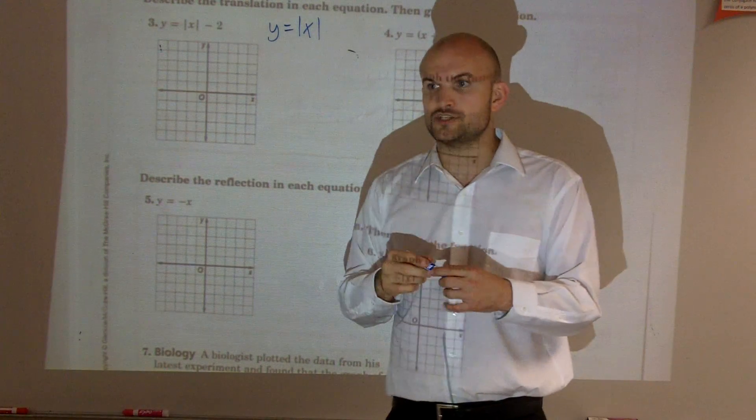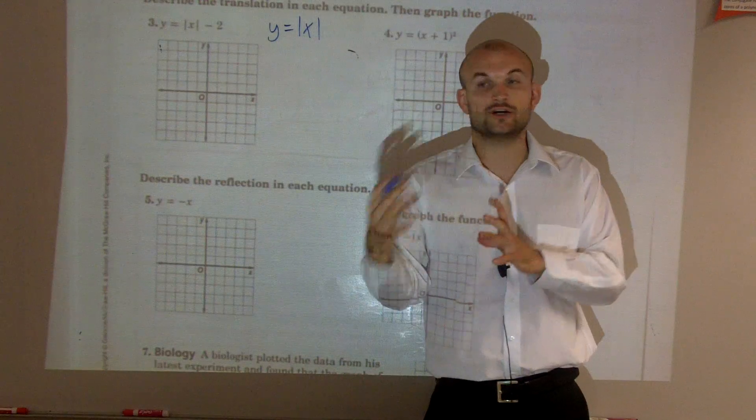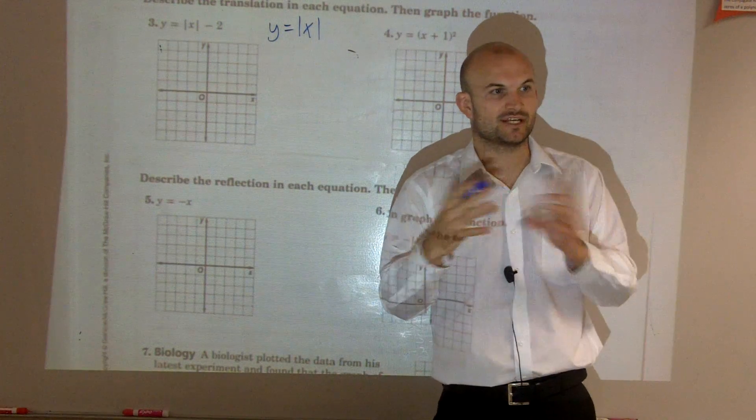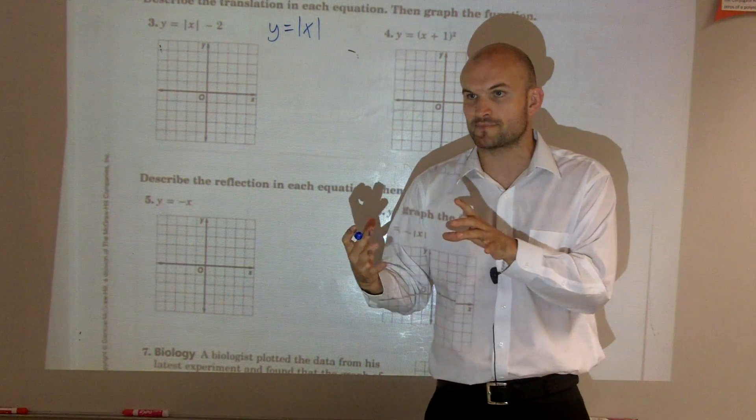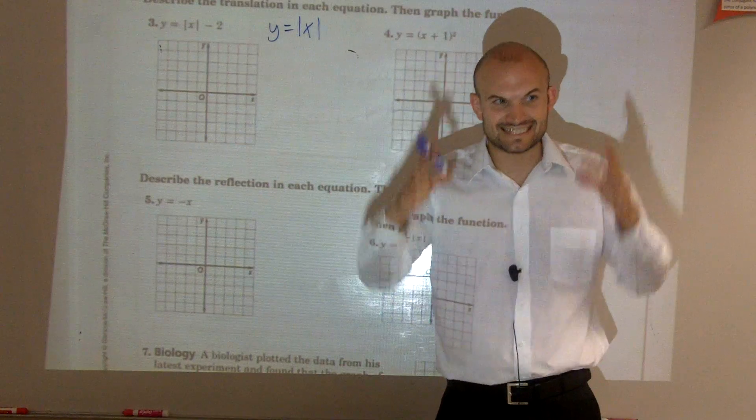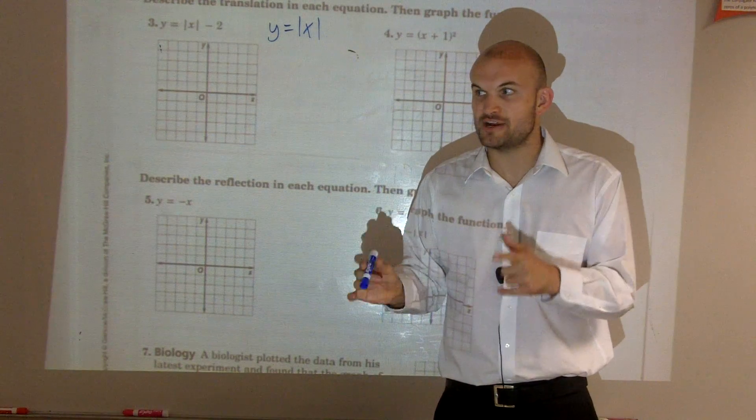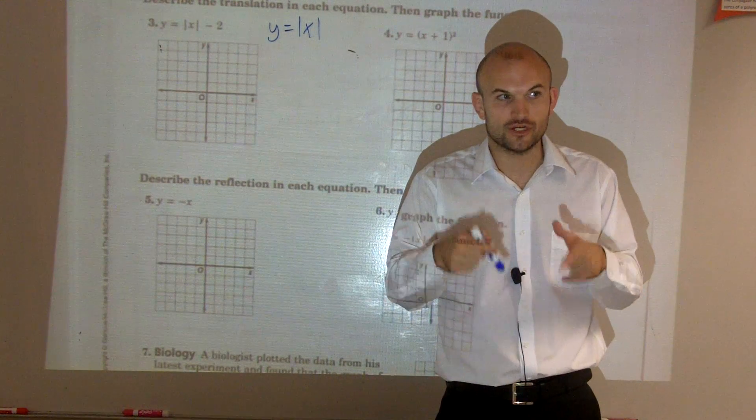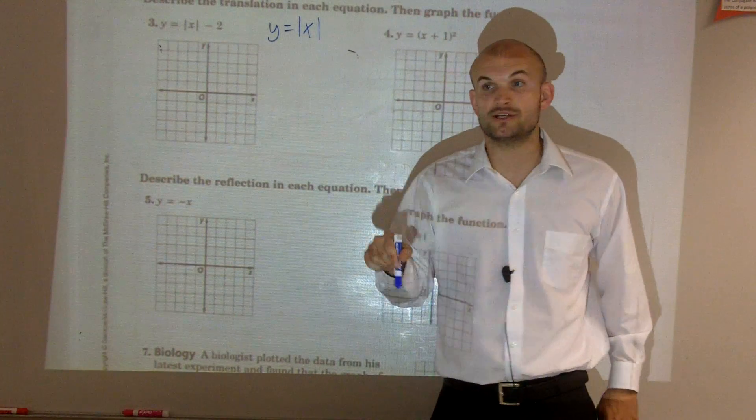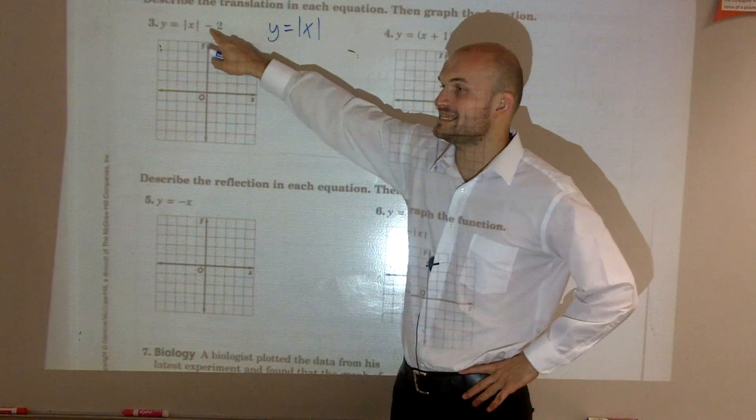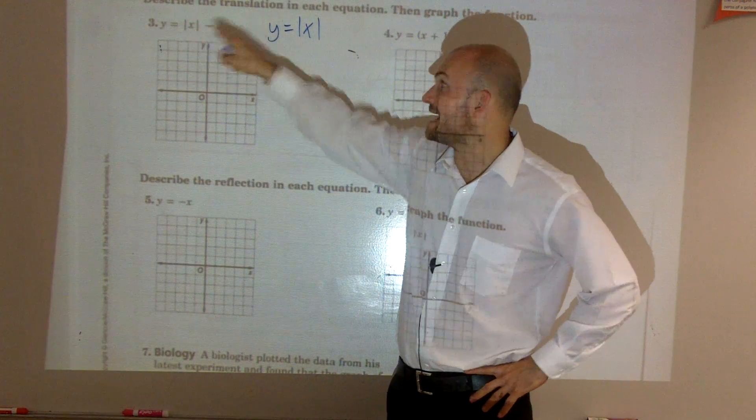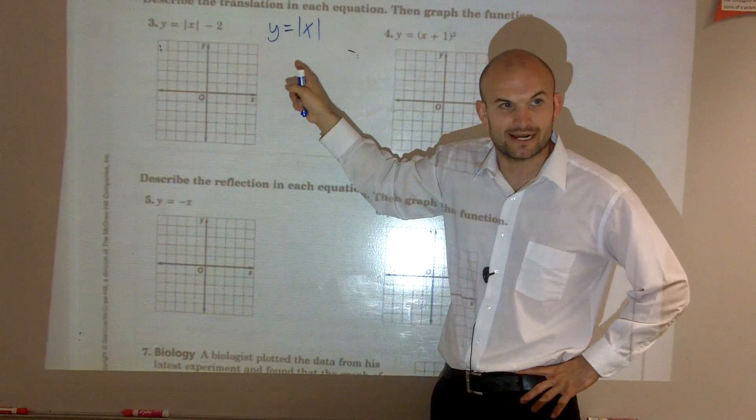Now, the next thing we need to determine is our c, what we talked about in our notes. c was our transformation. It altered our function. But there was a big difference if that transformation was inside the function or outside the function. So the next thing you want to do is determine, is this negative 2? Is that inside of this function or is it outside of the function?